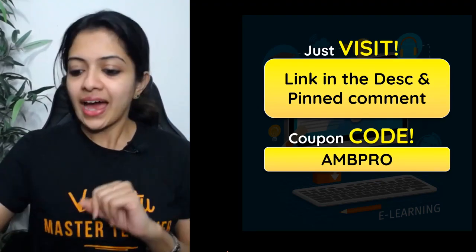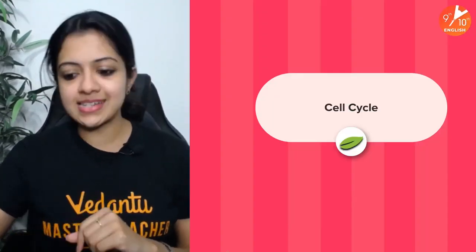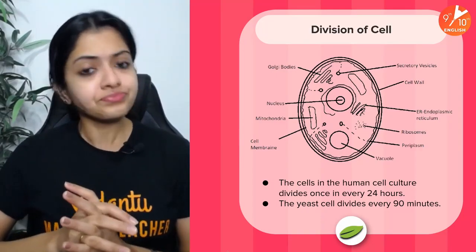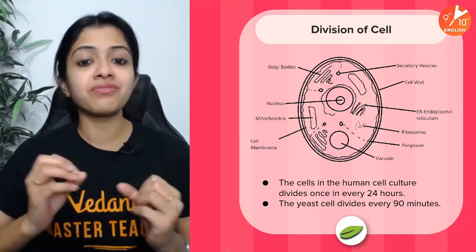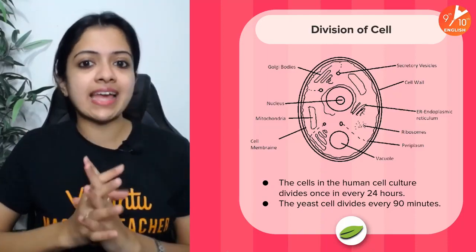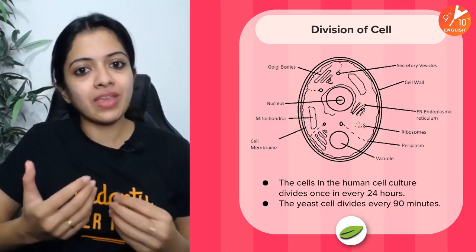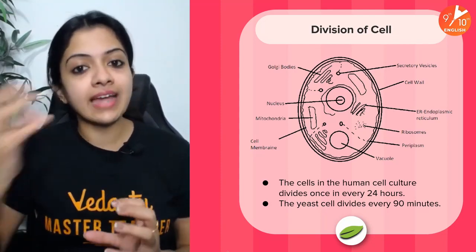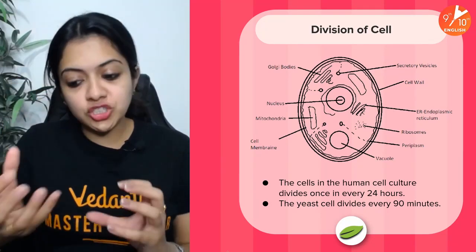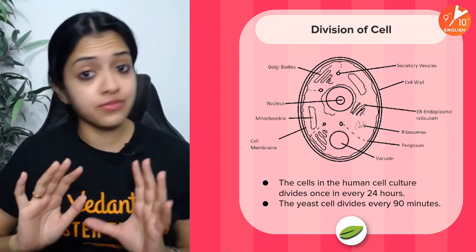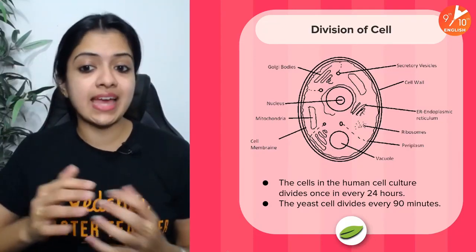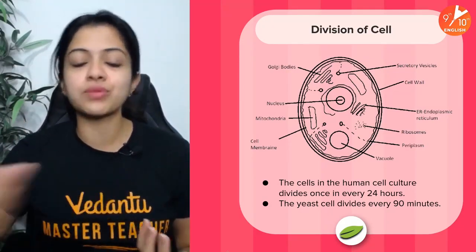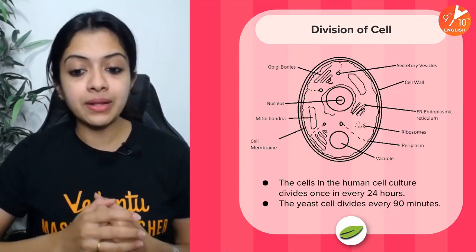About the cell cycle — division of a cell is something very important as far as the cell is concerned. A cell is formed, a cell divides. The cell cycle is basically the time period which we can call the life cycle of a cell. Division of a cell varies from cell to cell and from organism to organism.